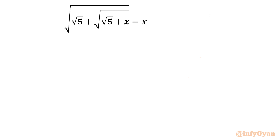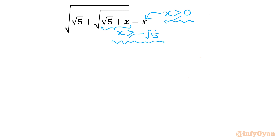Let's get started by writing the domain of the equation. From here I can write x is greater than or equal to minus root 5. Observing the right-hand side, it cannot be negative because we are taking the left-hand side as a square root, so x must be greater than 0. If I put x equal to 0, the left-hand side would be some non-zero value while the right-hand side is 0, which are not equal. Taking the intersection gives us x as a positive non-zero value.